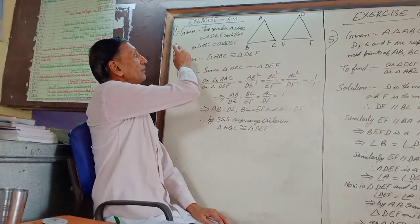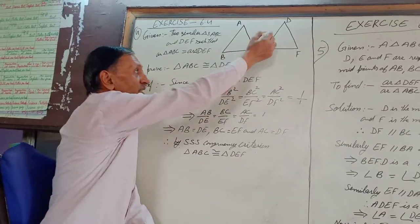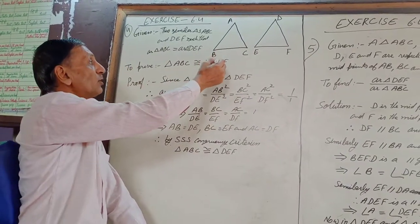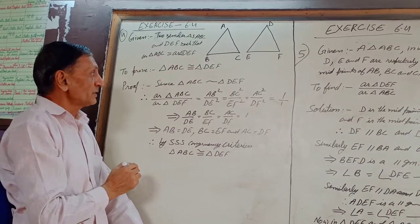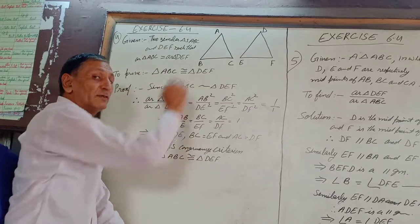We are given two triangles which are similar and also equal in area. We have to find out whether they are congruent.